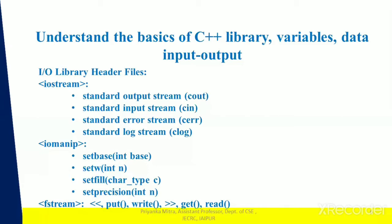The second header file is iomanip. It declares services used for performing formatted input-output with parameterized stream manipulators such as setw and setprecision. iomanip stands for input-output manipulators, and these methods are used for manipulating streams. fstream declares services for user-controlled file processing and mainly describes the file stream. This header file is used to handle data being read from a file as input or data being written into a file as output.